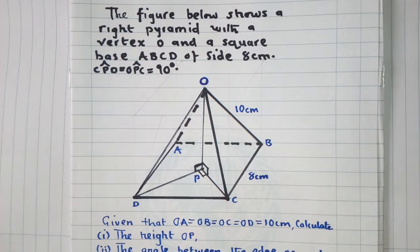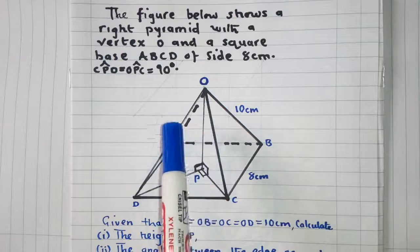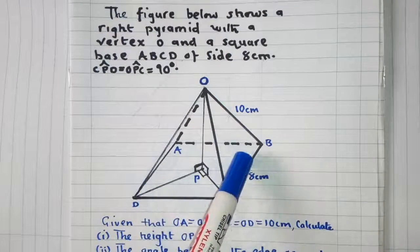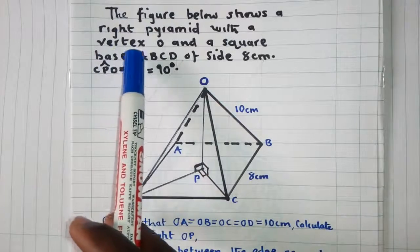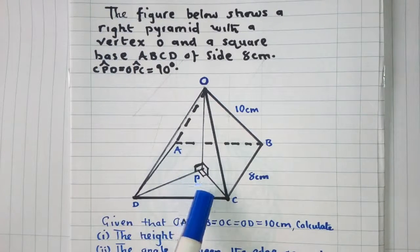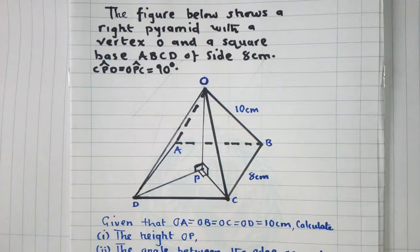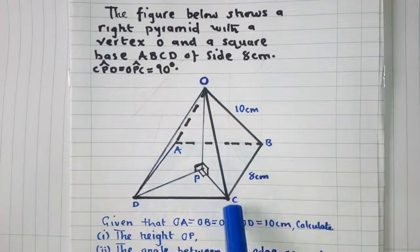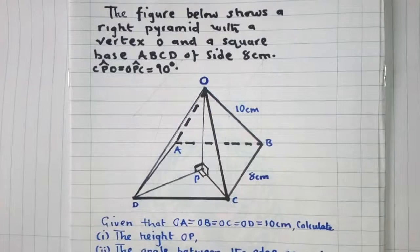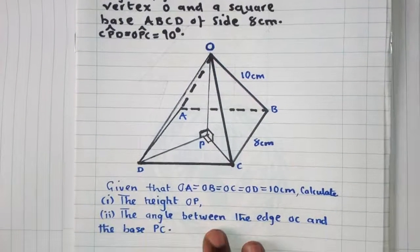Here's the question. We've been given this pyramid, and the base of the pyramid is a square base. It is also a right pyramid, and the angles at P are all 90 degrees. We have A, B, C, D as the corners on the base, and then the vertex at the top.